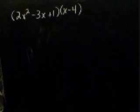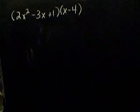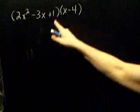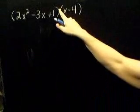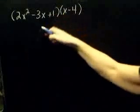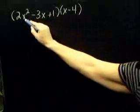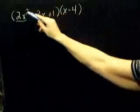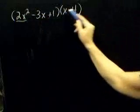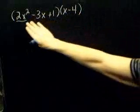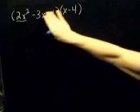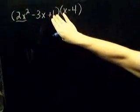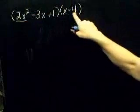This problem asks you to perform the indicated operations. Notice that you have two sets of parentheses and there's nothing in between them, so you're going to multiply. That means I need to take the 2x squared and distribute it to everything in this parentheses — in other words, I'm taking 2x squared minus 3x plus 1 and multiplying everything by x minus 4.